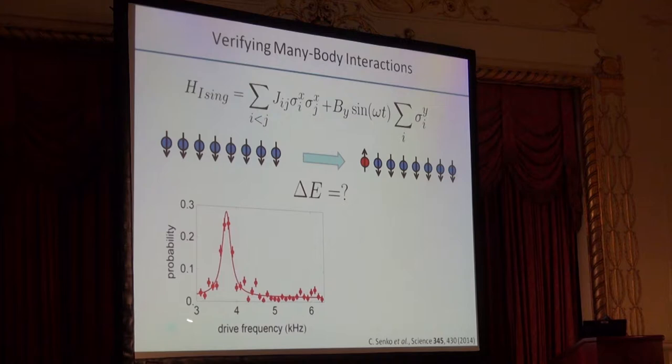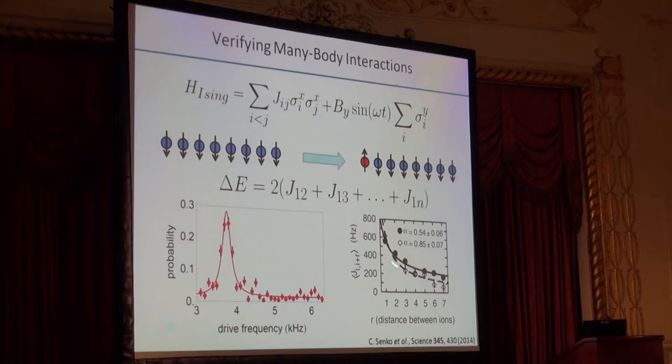When we modulate this drive frequency omega, we can trace out a very nice resonance, finding the probability of ending in this one spin flip state as a function of frequency. We can compare it to theory and find really excellent agreement. We don't have to stop there. The energy that it costs to flip this one spin on the end is actually a sum of all of the different spin-spin coupling terms in our Hamiltonian. If we make enough different energy measurements by flipping these different spins in the system, we can back out what all of these different spin-spin couplings must have been. When we do that, we verify that we have these power law type decays in our system and this tunable knob to change the range of those interactions.